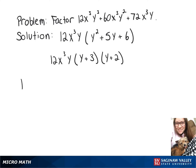So now we can rewrite our whole trinomial 12x³y³ + 60x³y² + 72x³y as 12x³y times (y + 3) times (y + 2).